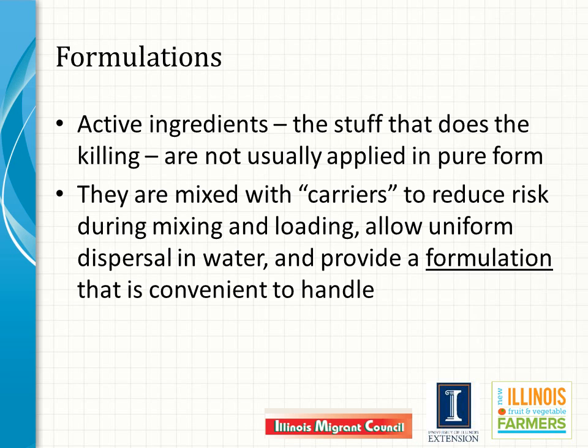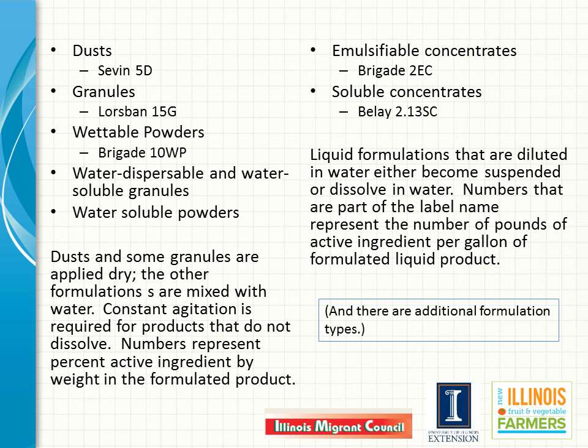The active ingredients in pesticides, either synthetic or naturally derived, are almost never sold in pure form. They are mixed with carriers that make them easier to mix with water in a spray tank, or spread more evenly as a dust. So the pesticide product you purchase is called the formulated product, or a pesticide formulation. The formulations on the left are dry products: dusts, powders, and granules. Dusts and some granules are applied dry. The other formulations are mixed with water. Constant agitation is required for products that do not dissolve. Numbers represent the percent active ingredient by weight in the formulated product.